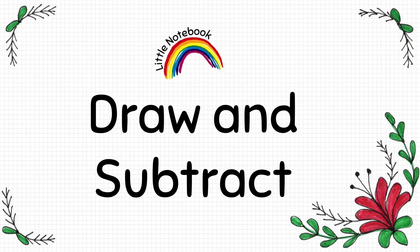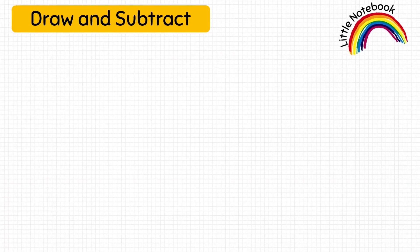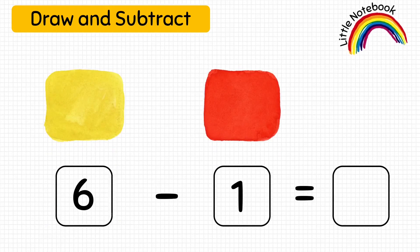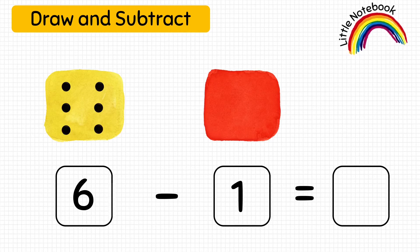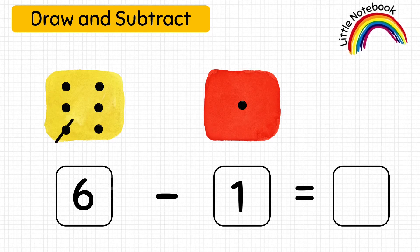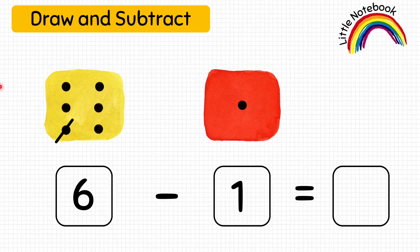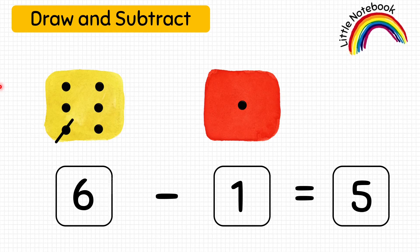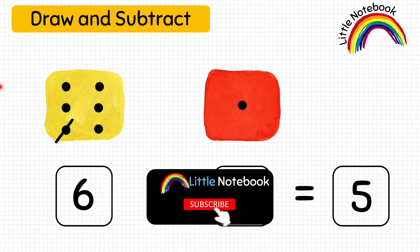Now our next worksheet is draw and subtract. Here the kid has to read the number and put the same number of dots in the dice, then subtract as before. The first number is six, so the kid puts six dots in the dice. The next number is one, so the kid draws one dot in the red dice. Now to subtract, we cross one dot. How many dots are we left with? One, two, three, four, five — so the answer is five. Six minus one equals five.